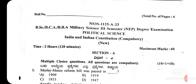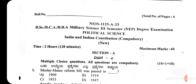This paper is for 120 minutes, maximum marks is 60, and in Section A you will be having multiple choice questions and all questions are compulsory. This is the BSc, BCA, and BBA third semester NEP scheme Indian Constitution paper, and it is also the compulsory paper for BA, BCom, and BSW fourth semester.